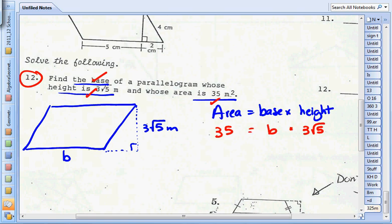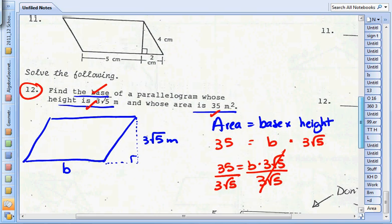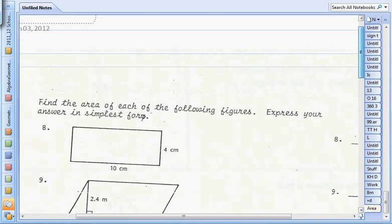Let's rewrite this: 35 equals b times 3√5. To get b by itself I need to divide both sides by 3√5. Now I want to make a decision: do I simplify, do I find a decimal and approximate? So I'm going to look at the instructions and see what it says.